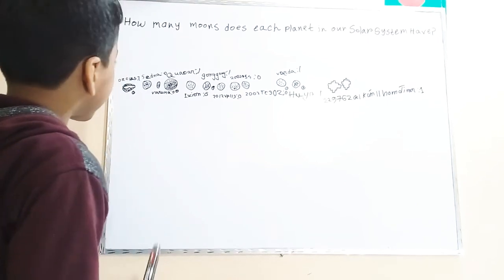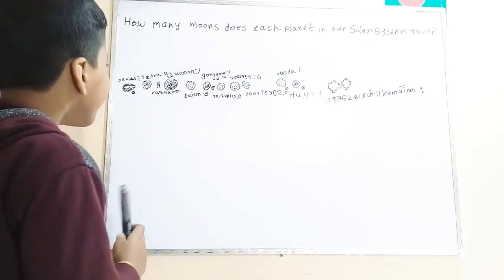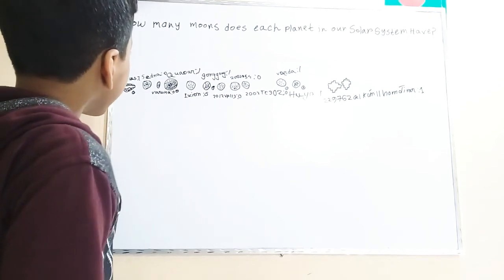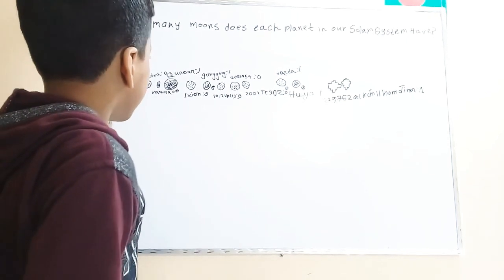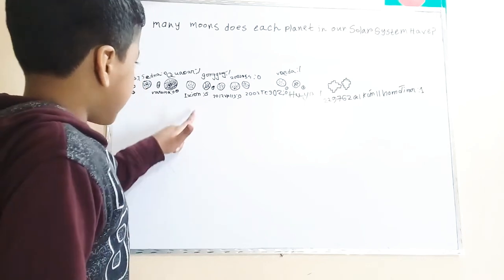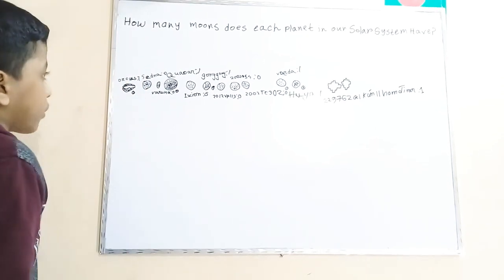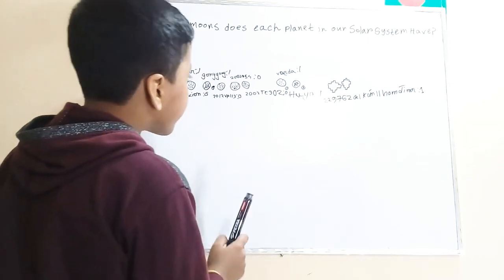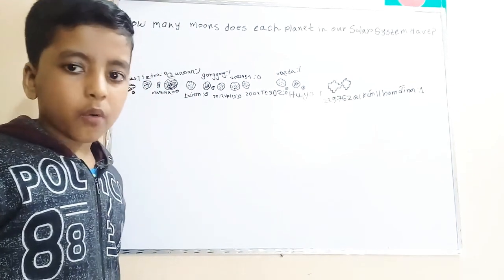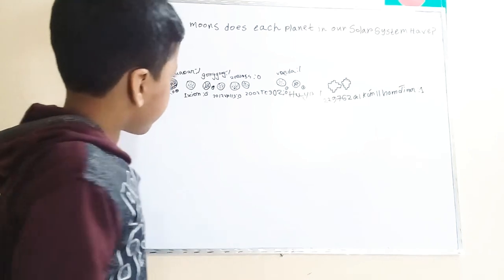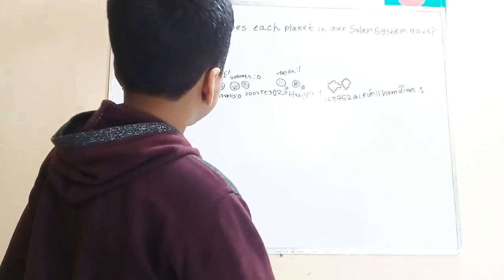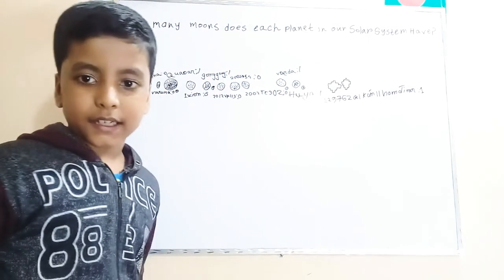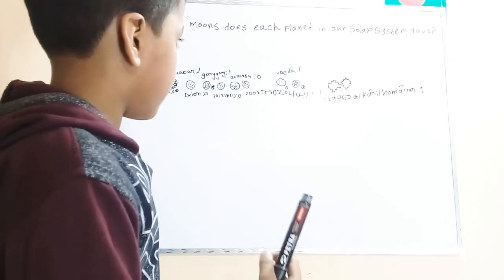First, Orcus. Orcus has one moon. Next, Sedna has no moons. It's very small, so has no moons. As well as Ixion. Ixion has no moons, but Quaoar has one moon. Gonggong has one moon. 2012 VP113 has no moons, and 2002 MS4 has no moons. 2002 TC302 has no moons.